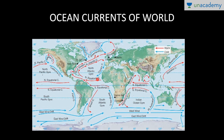The warm ocean currents move from the equator towards the poles. And the cold ocean currents, like the Labrador Current and Canary Current, move from the poles towards the equator.